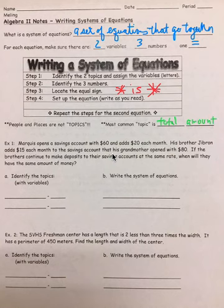So if we look at this first example, Marquise opens a savings account with $60 and adds $20 each month. His brother, Gibran, adds $15 each month to the savings account that his grandmother opened with $80. If the brothers continue to make deposits to their savings accounts at the same rate, when will they have the same amount of money?